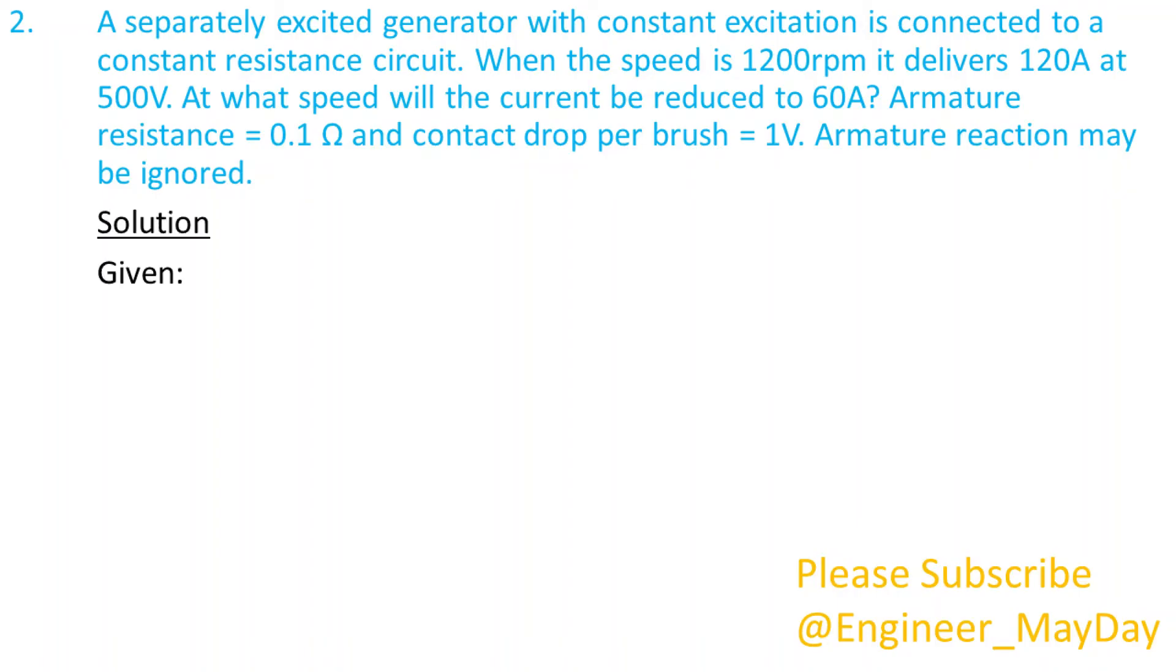Solution. Given: VB equals 2 volts, N1 equals 1200 RPM, I1 equals 120 amperes, I2 equals 60 amperes, V1 equals 500 volts, RA equals 0.1 ohms.